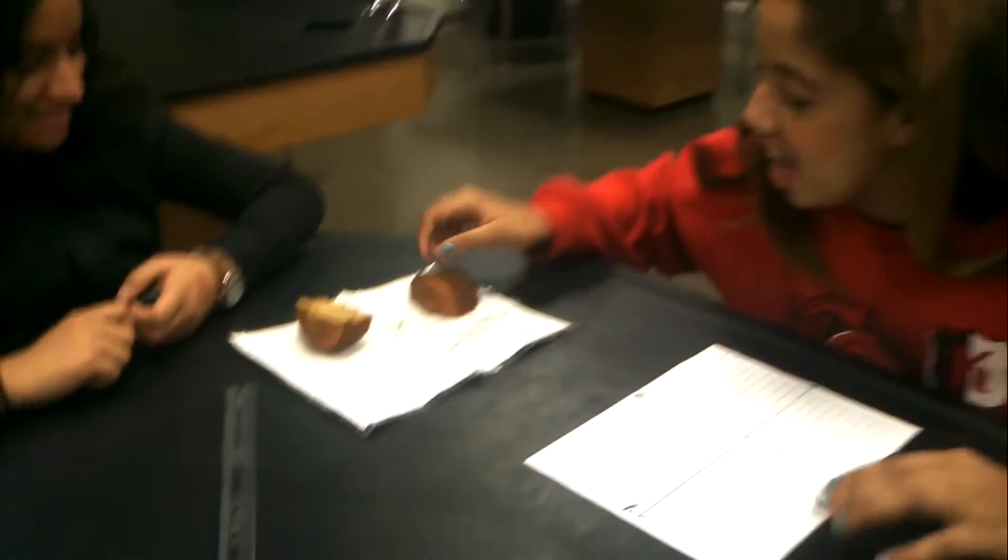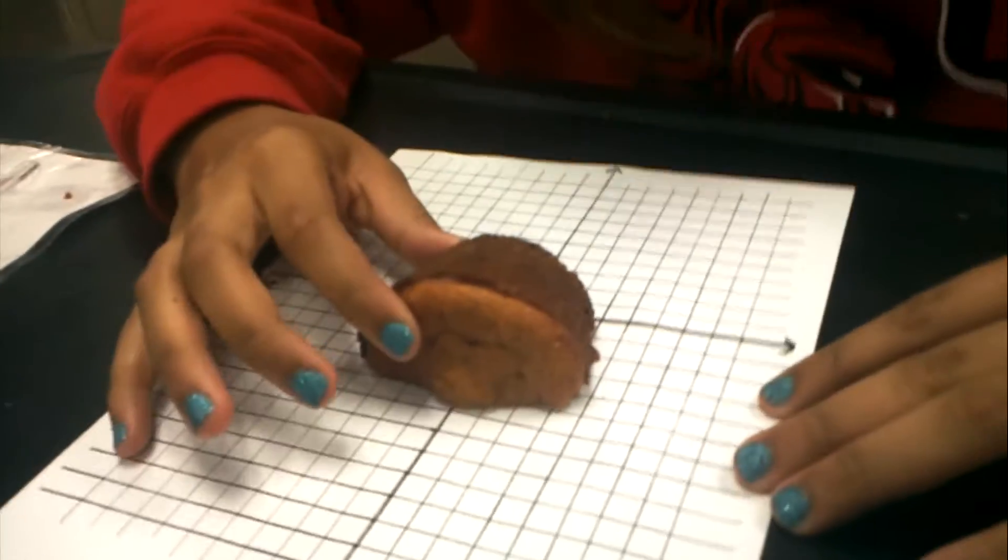So now that we've cut the muffin in half, we're gonna place the flat surface onto the graph and center it. And then we're gonna trace around the muffin to find the curve of the muffin.